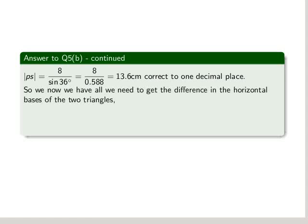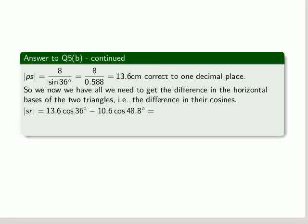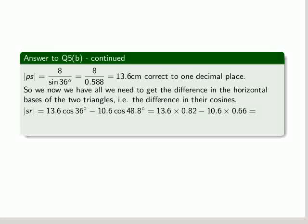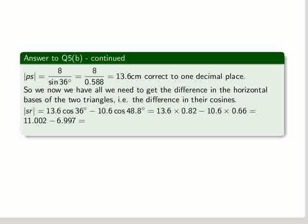So now we have all we need to get the difference in the horizontal bases of the two triangles, i.e. the difference in their cosines. So SR is equal to 13.6 times cosine of 36 less 10.6 times cosine of 48.8. So we use our calculator to evaluate the cosines.